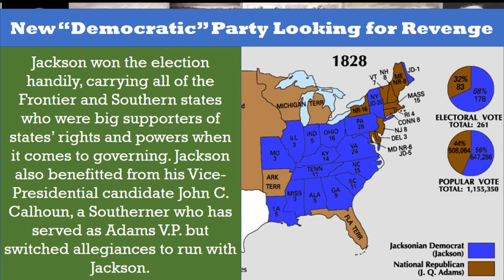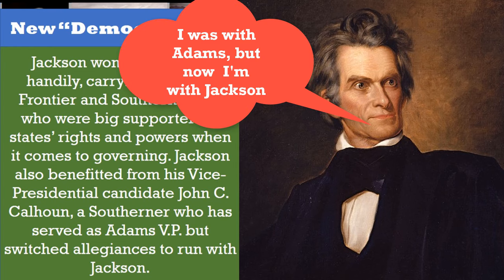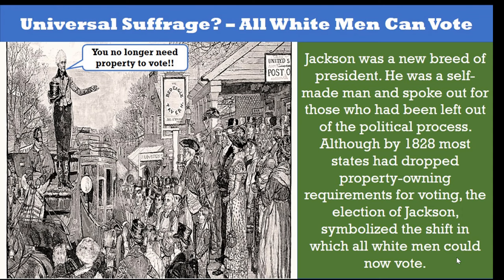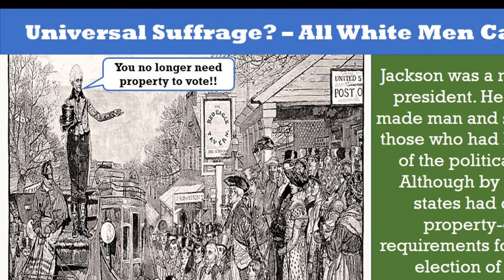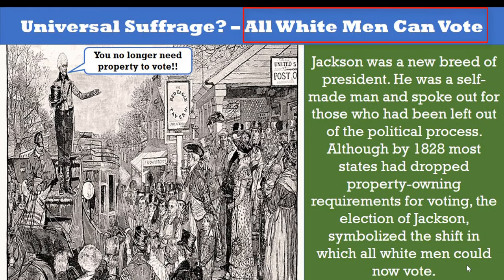Jackson won the election handily, carrying all of the western frontier and southern states, who were big supporters of states' rights and powers when it comes to governing. Jackson also benefited from his vice presidential candidate, John C. Calhoun, a southerner who had served as Adams' VP but switched allegiances to run with Jackson. Jackson was a new breed of president — a self-made man who spoke out for those who had been left out of the political process. Although by 1828 most states had dropped property-owning requirements for voting, the election of Jackson symbolized the shift in which all white men could now vote.